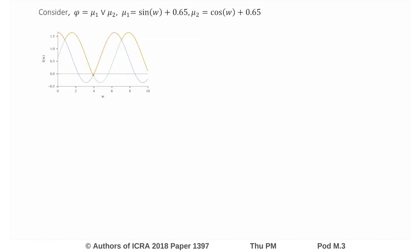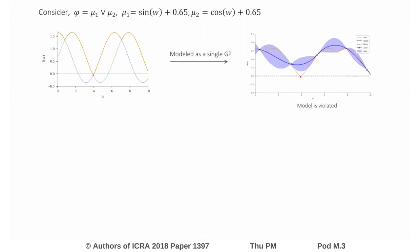We show a modeling paradigm with an example where phi is equal to mu1 or mu2. In the graph, mu1, mu2 and phi are shown in blue, green and the dotted orange line. If we were to model phi with a single Gaussian process blindly, we get the graph on the right where the minimum shown as the red star is not contained within the confidence bounds.